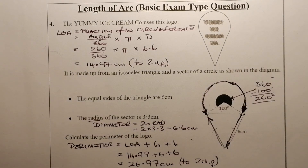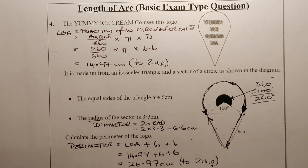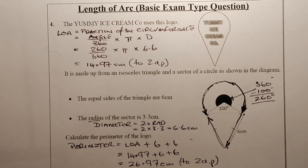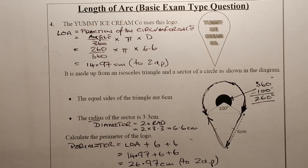So that's two of the basic exam-type questions. I say they're basic because the more complicated ones involve working backwards to find an angle or the radius. But these ones here could appear in the National 5 exam.